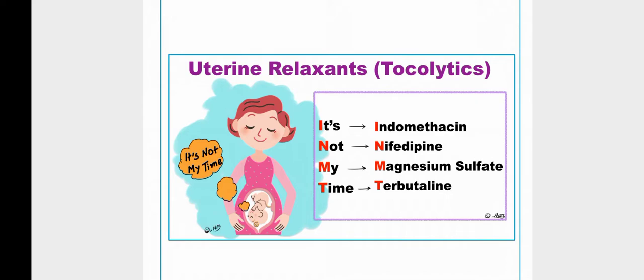NSAIDs are divided into two classes: reversible and irreversible. Reversible inhibitors include ibuprofen, indomethacin, and naproxen, while irreversible inhibitors include acetylsalicylic acid, which is simply called aspirin. Indomethacin is a reversible inhibitor of the cyclooxygenase enzyme.